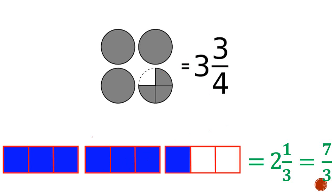Alternatively, looking at the rectangles at the bottom: we have 3 rectangles with parts colored blue. We have 2 whole rectangles colored blue, giving us 2. The third rectangle is divided into 3 equal parts and only 1 of those parts is colored, so it's 1 over 3. This is the same as 2 and 1 third. Alternatively, each rectangle is divided into 3, and counting all the pieces we have 1, 2, 3, 4, 5, 6, 7. So 2 and 1 third is the same as 7 over 3.